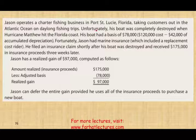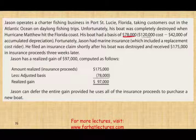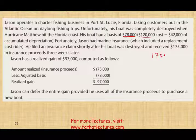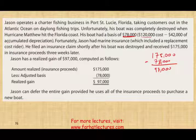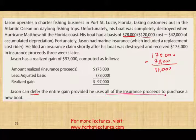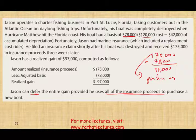Jason operates a charter fishing business in Florida, taking customers out on day-long fishing trips. His boat was completely destroyed when Hurricane Matthew hit the Florida coast. His boat has a basis of $120,000 — cost minus accumulated depreciation. Jason had marine insurance and received $175,000 from his insurance claim, giving an amount realized of $175,000 and an adjusted basis of $78,000, so Jason realizes a gain of $97,000. Jason can defer the entire gain provided he uses all the insurance proceeds to purchase a new boat.